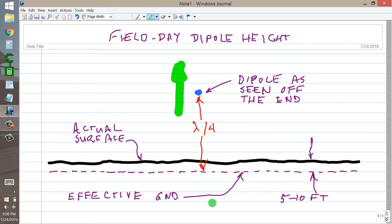What you get then is, in effect, a two element end fire array that produces a reinforced phase going straight up.